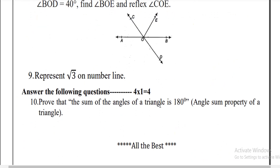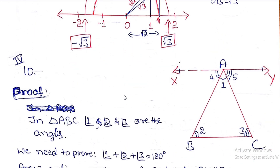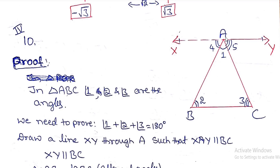The 10th question: prove that the sum of the angles of a triangle is 180 degrees. Take triangle ABC with three internal angles 1, 2, and 3. We need to prove that the sum of these three angles equals 180 degrees.